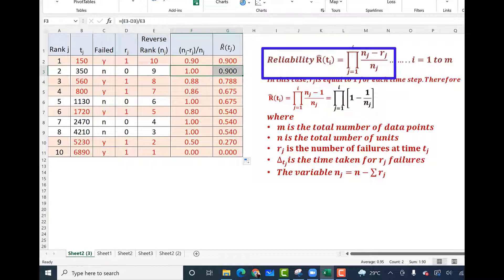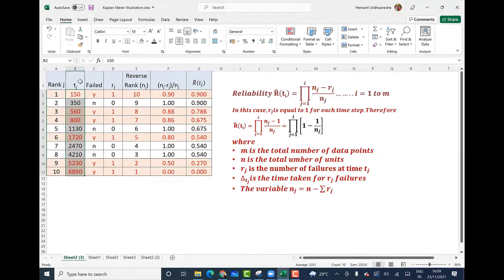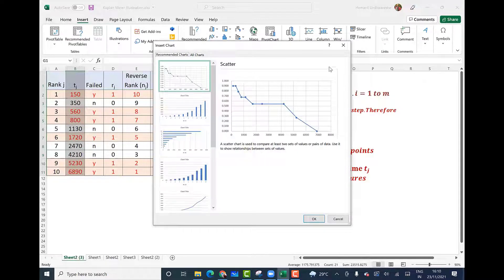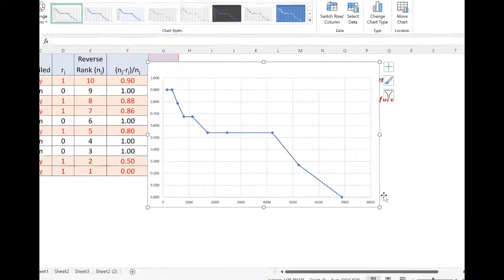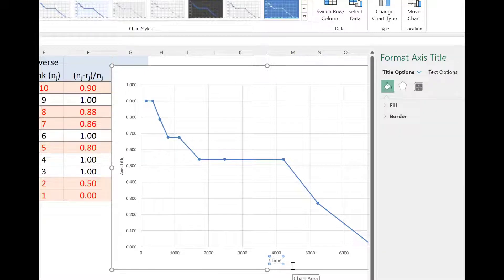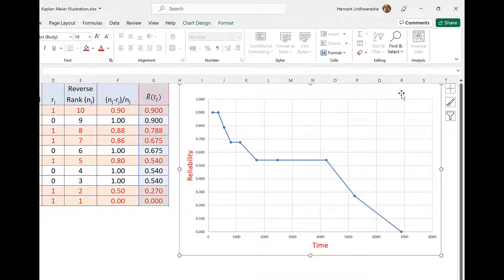Wherever there is no failure, I will just make it blank for the purpose of understanding. So we will now plot the reliability as a function of time. And we select tj column and rtj column and just insert recommended charts. That is the recommended chart. And we can easily use that. This chart shows reliability as a function of time. The x-axis is time and the y-axis is reliability. I can of course add titles and change font or color as required. This is the chart that represents reliability at any time tj based on the Kaplan-Meier calculations.